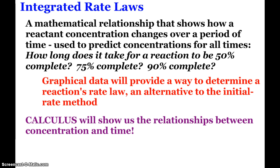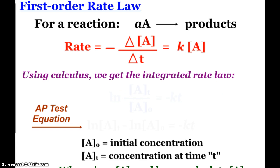It's a relationship showing how a reactant concentration changes over a period of time, and we can use them to predict concentrations at all different times of the reaction. How long does it take for a reaction to be halfway done, or 75% done, or even 90% done. We can also look at some graphical data that is going to help us determine a reaction rate law, and we'll be doing a lab with that. Calculus is going to give us these relationships, but we don't have to know calculus in order to do these problems.